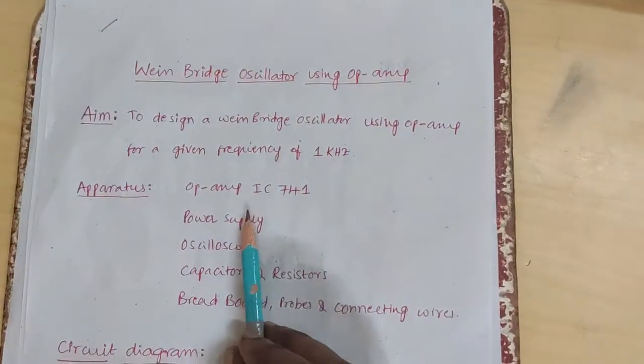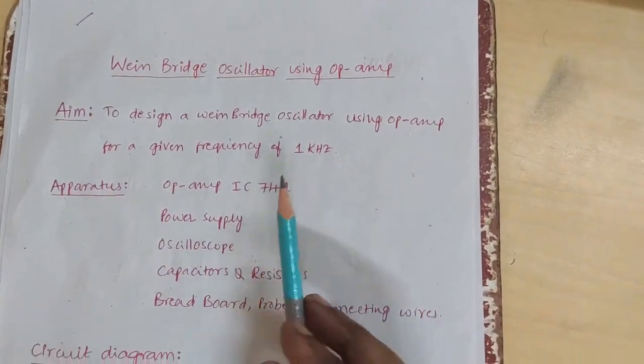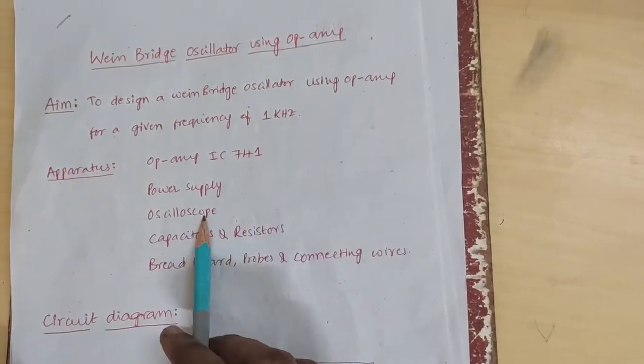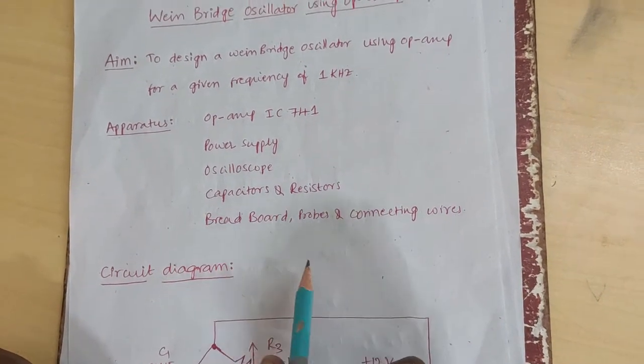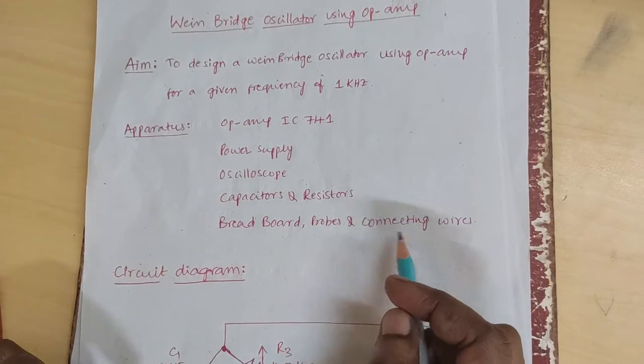Required apparatus: op-amp 741, power supply, oscilloscope, capacitors, resistors, breadboard, probes and connecting wires.